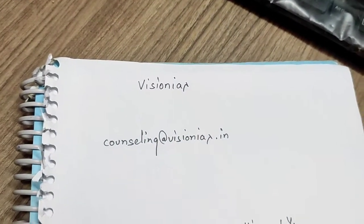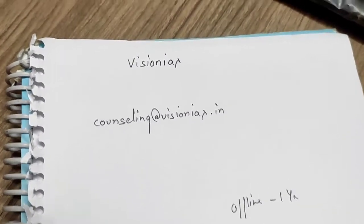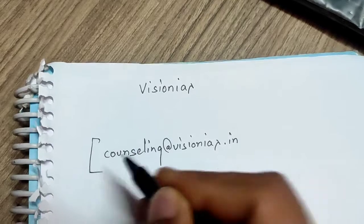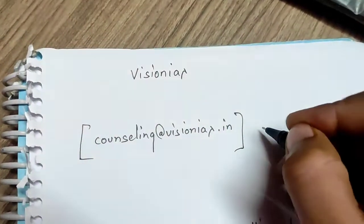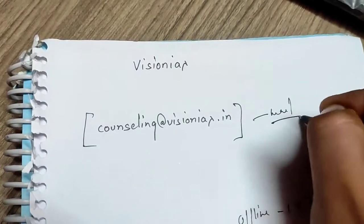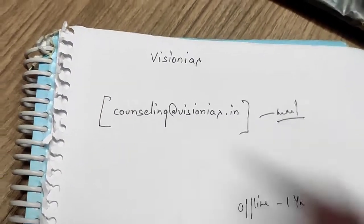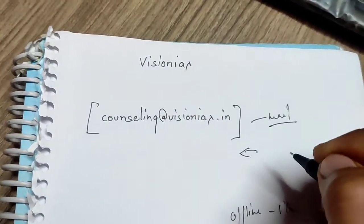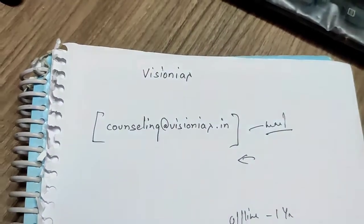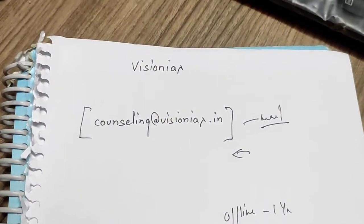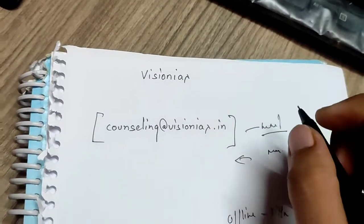But some friends have got concessions. So if you go and talk about your fees, there is a mail ID—counseling@visioniаs.in. If you send a mail to this mail ID requesting a concession, then they will revert back sometimes two days later. Then you have to send mark sheets if you want to provide them.